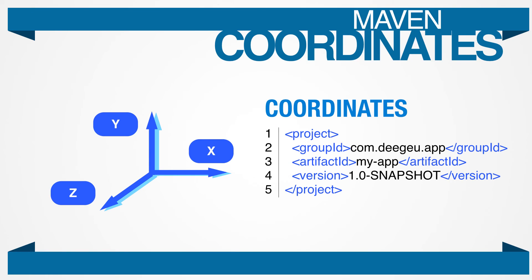Maven coordinates define a specific project, similar to the way that X, Y, and Z define a point in space. A Maven coordinate is defined by a group ID, an artifact ID, and a version ID.